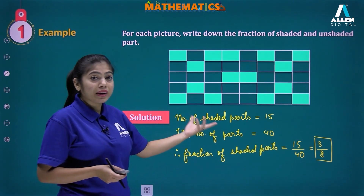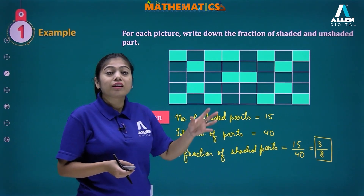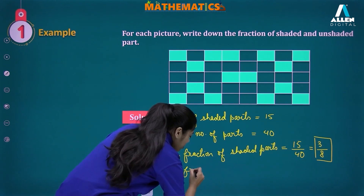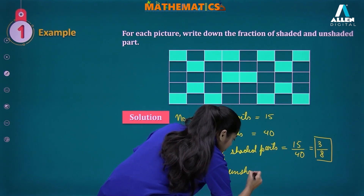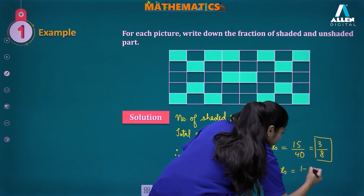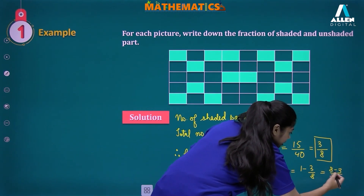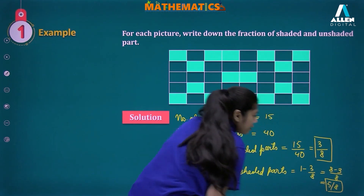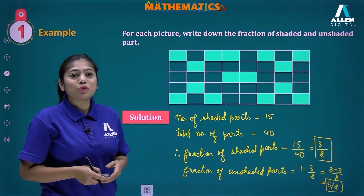We can find the unshaded parts by subtracting from one, since this is one complete whole. So the fraction of unshaded parts equals one minus three upon eight. Taking the LCM, that gives eight minus three all upon eight, which equals five upon eight. So the fraction of unshaded parts is five upon eight.